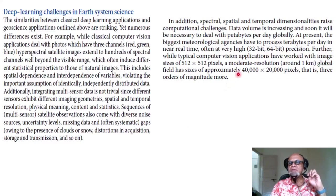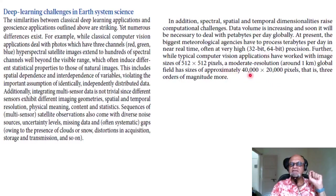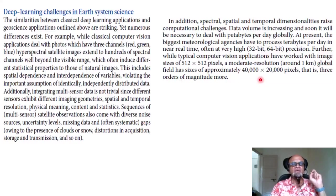In addition, spectral, spatial, and temporal dimensionalities raise computational challenges. Data volume is increasing and soon it will be necessary to deal with petabytes per day globally. At present, the biggest meteorological agencies process terabytes per day in near real-time, often at very high precision — 32-bit or 64-bit. While typical computer vision applications work with image sizes of 512x512 pixels, a moderate-resolution 1km global field has sizes of approximately 40,000x20,000 pixels — three orders of magnitude larger than what deep learning algorithms have typically dealt with.